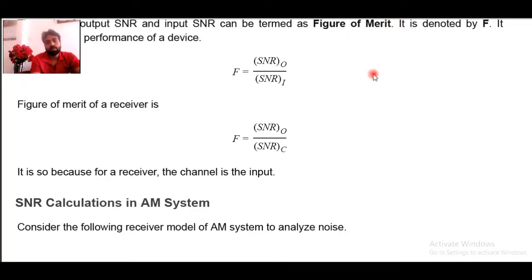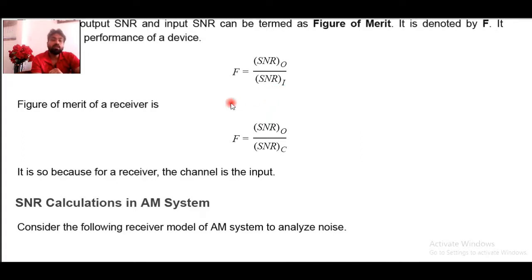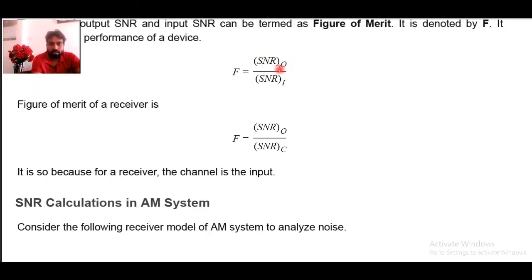The figure of merit is required to be calculated. It is a simple formula: figure of merit equals SNR output divided by SNR input. This figure of merit is called the device performance indicator, and it is important to understand whether our devices are working properly. This ratio should be as high as possible. Similarly, the receiver figure of merit is calculated as SNR output divided by SNR of channel, because for a receiver the channel is the input. This checks receiver performance — the receiver takes channel input and produces output.